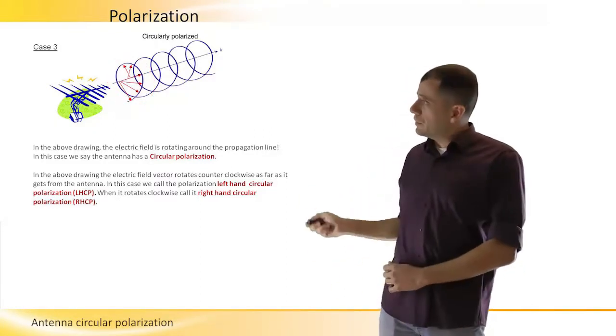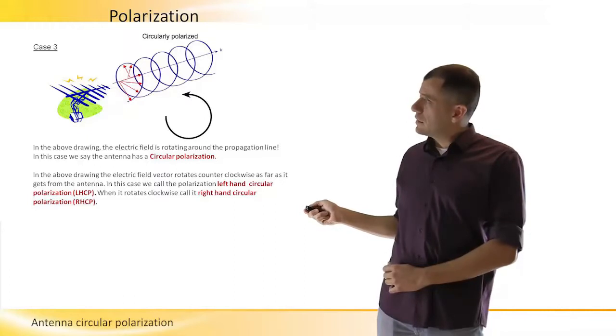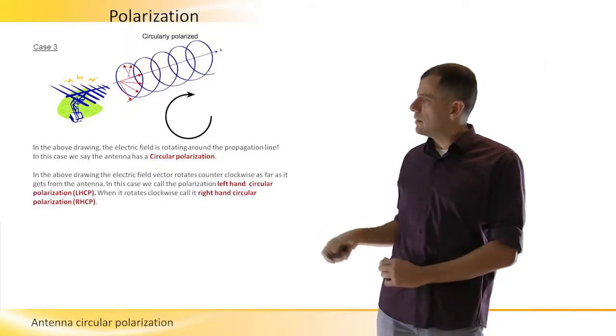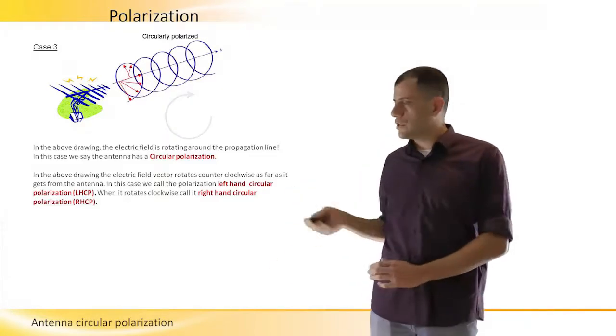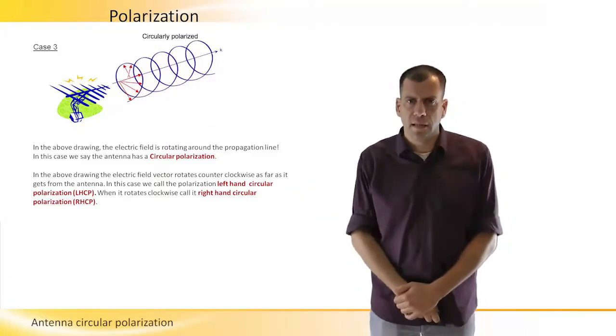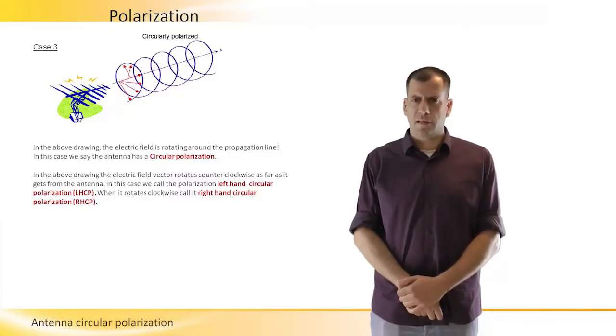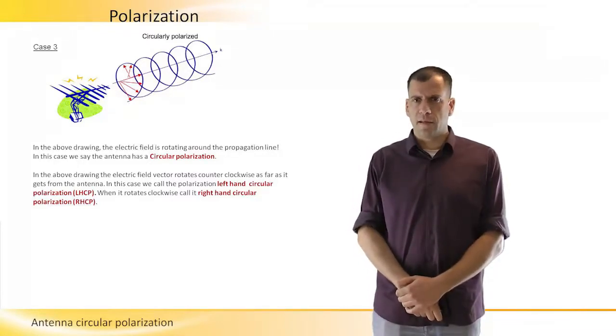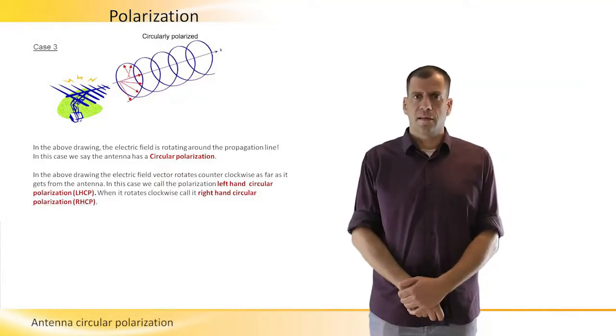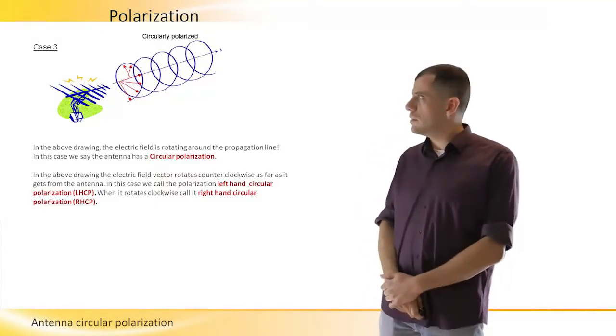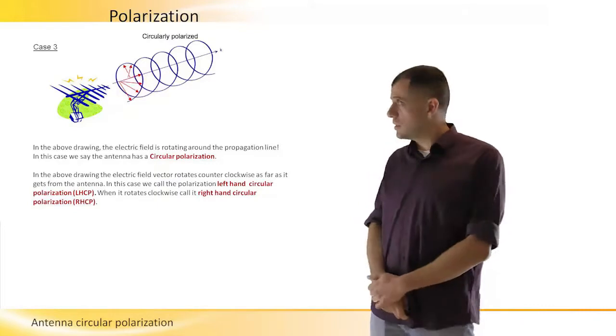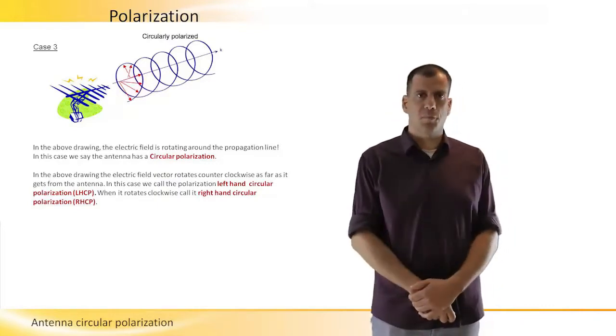It can turn counterclockwise or clockwise. In the picture in the slide, we can see that an electric field is rotating counterclockwise. In this case, we call the polarization left-hand circular polarization.